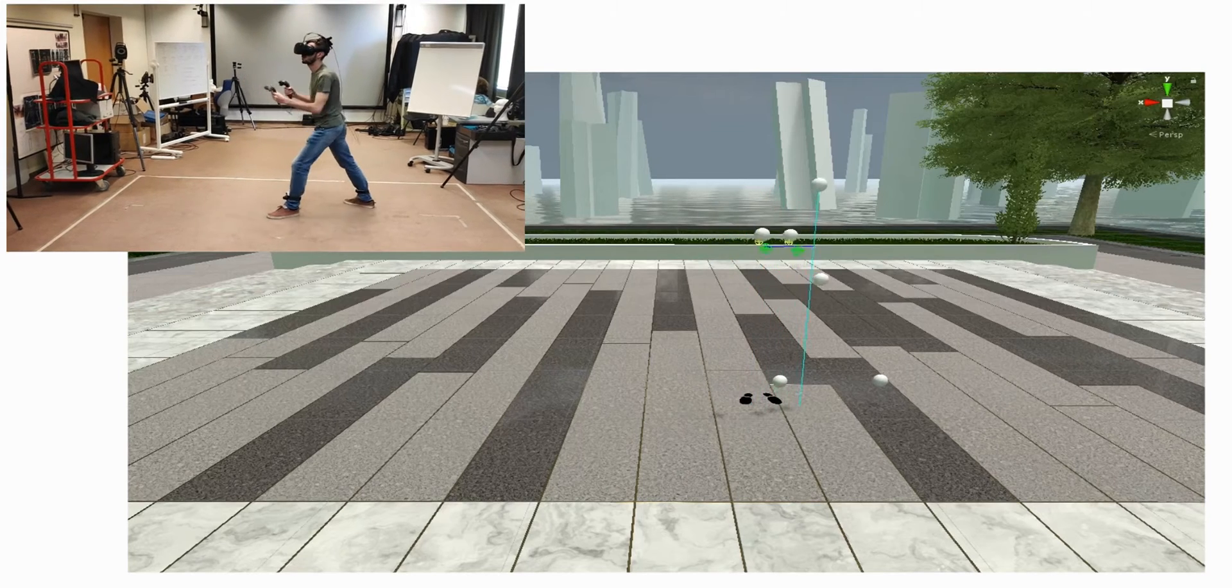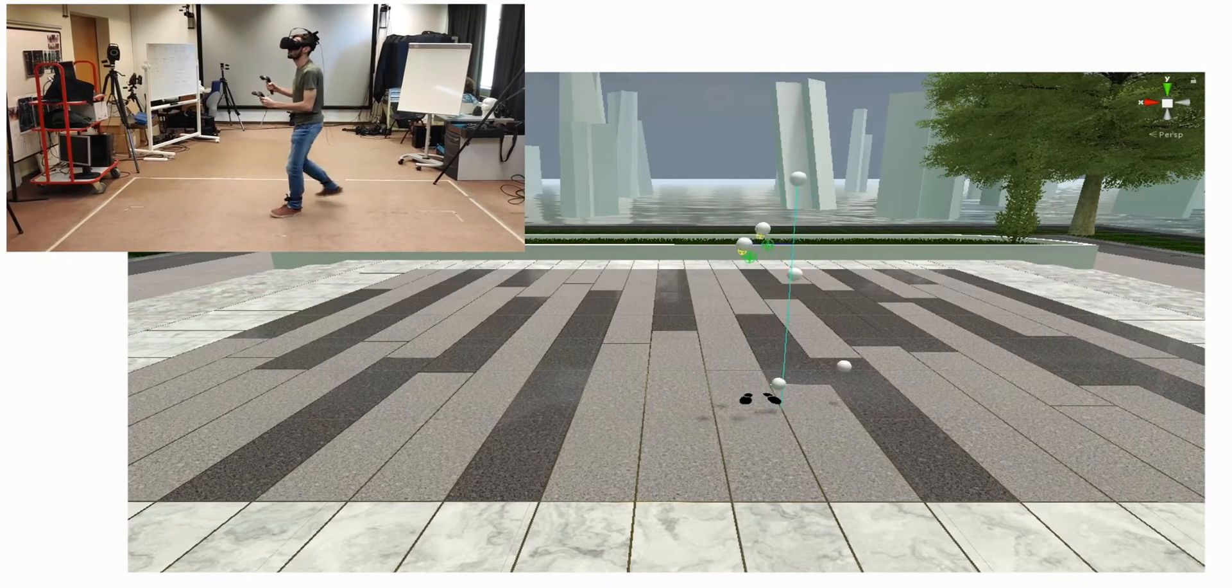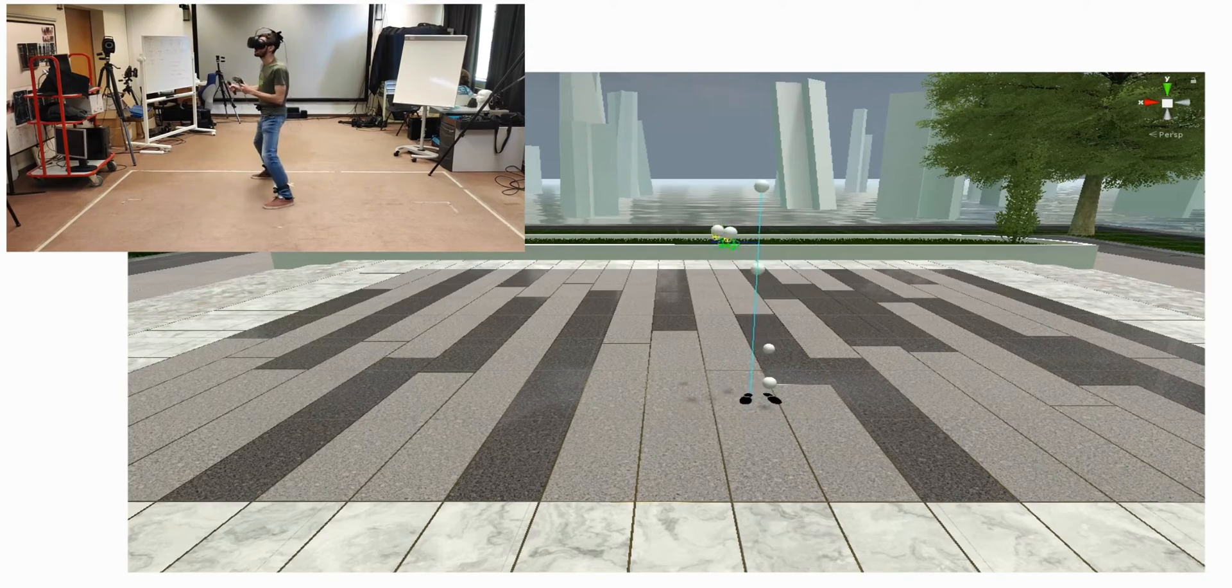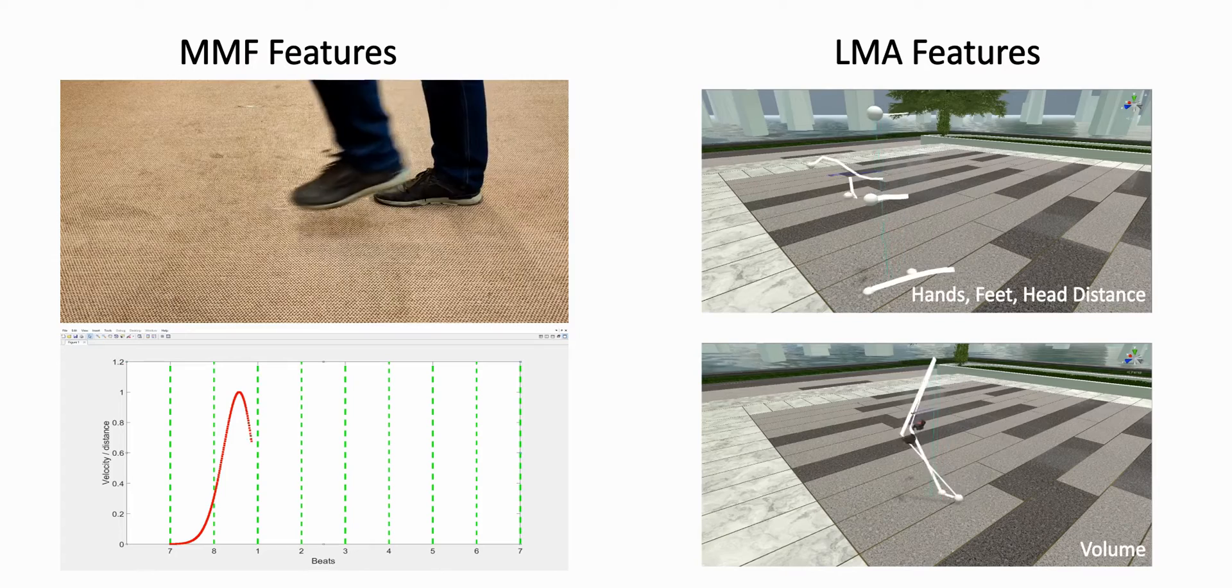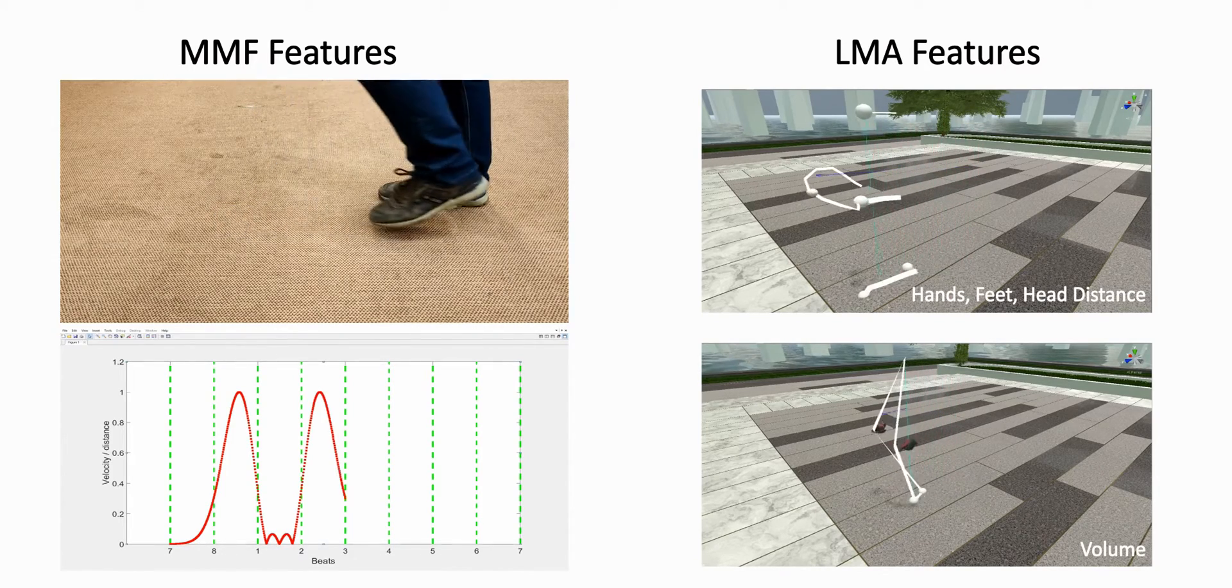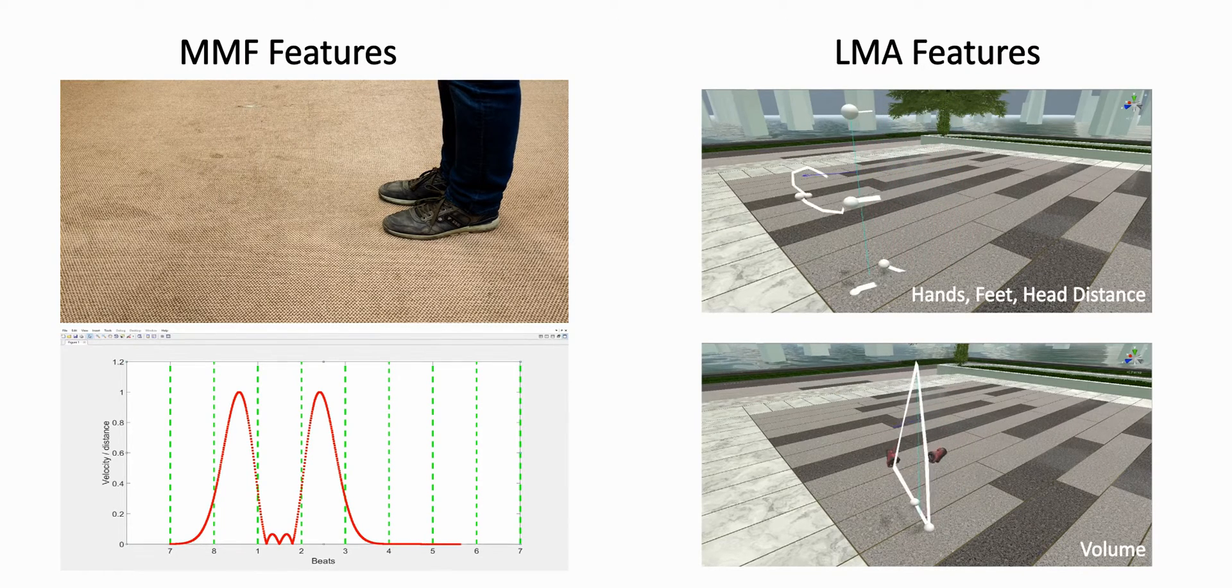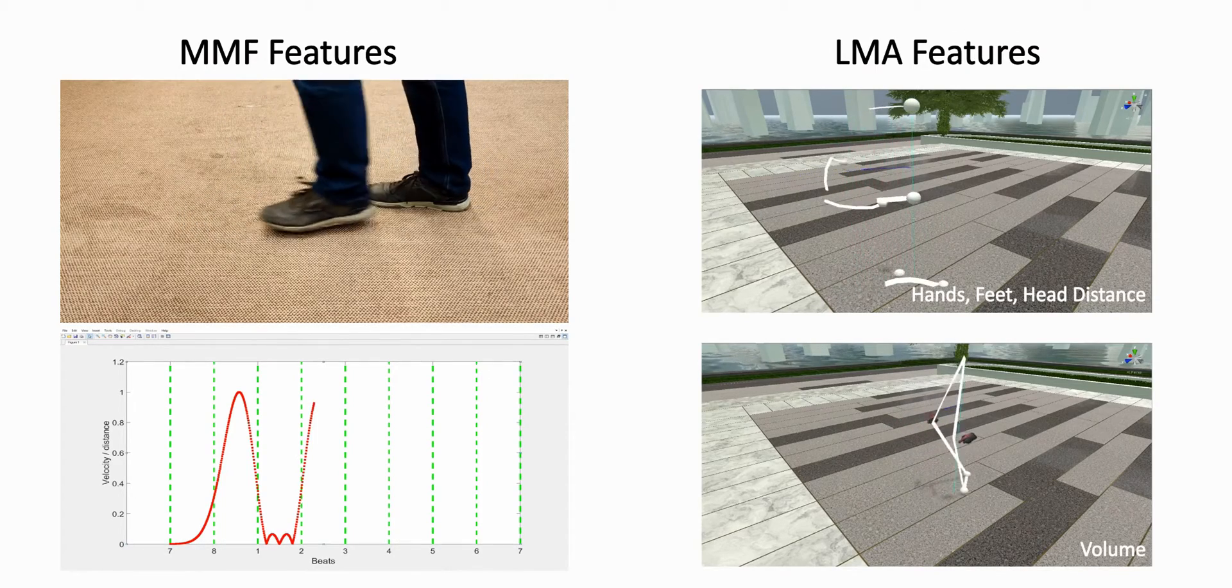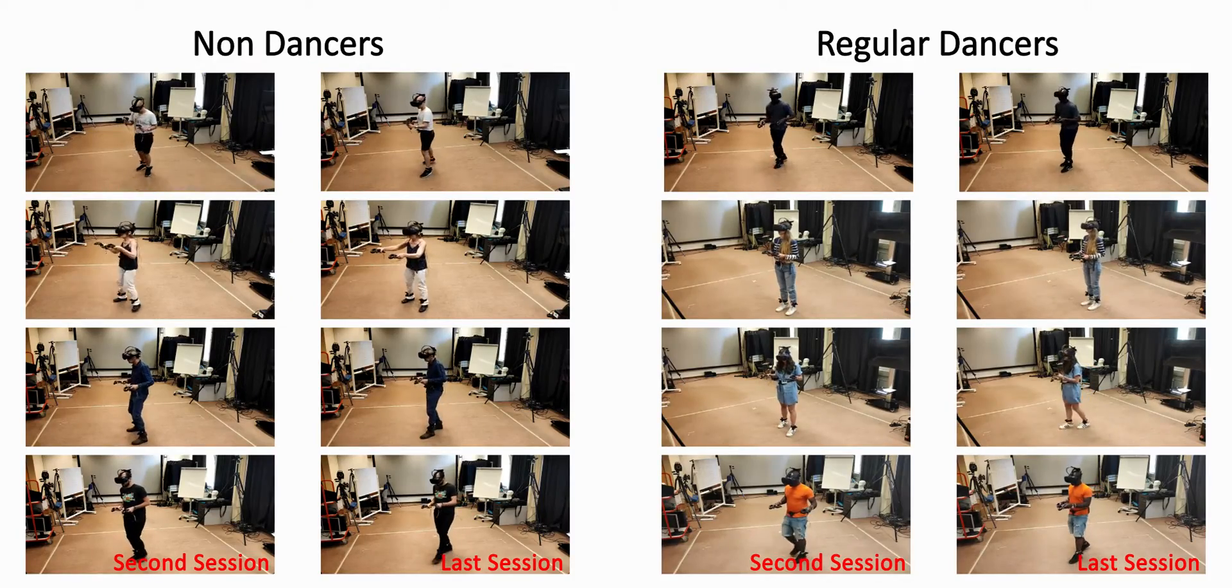The motion of the user is recorded at six points using motion capture technology to enable motion analysis and evaluation of performance. We used well-known methods for analyzing our motion data: the music motion features, such as step accuracy or feet synchronization, and the Laban movement analysis features, such as the distance between the end effectors or the body volume of the performer over time.